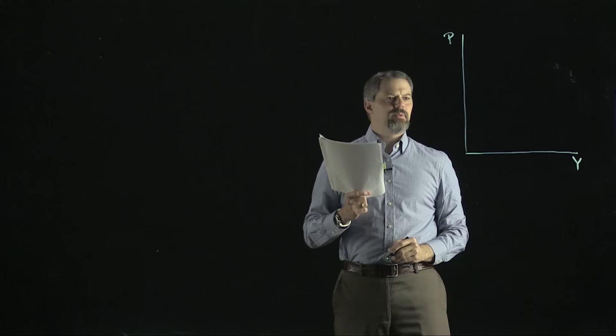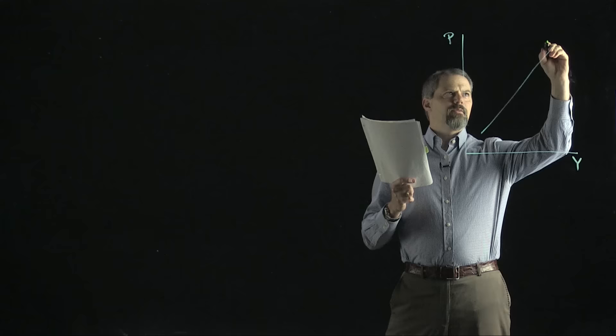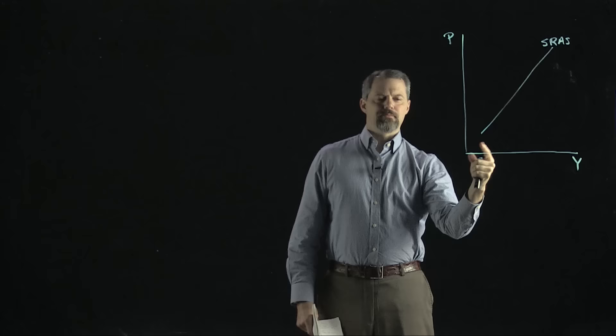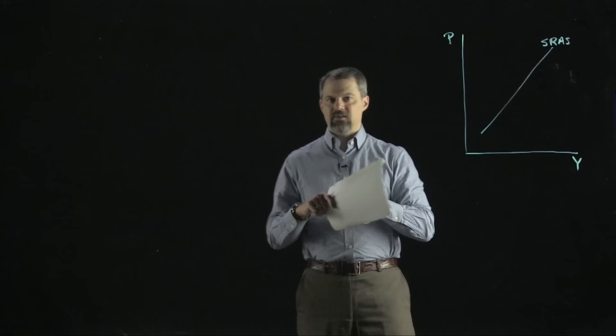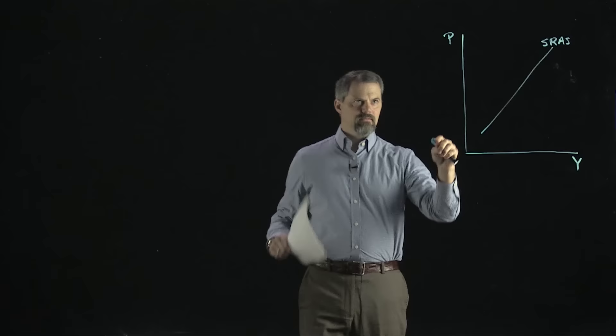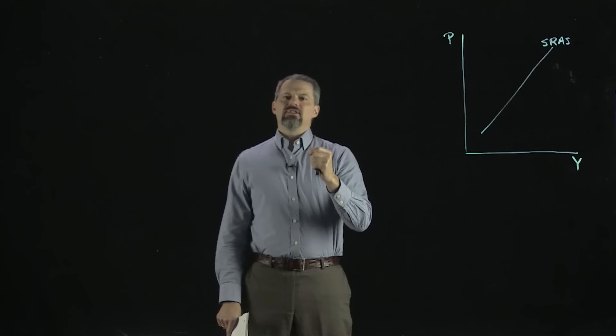The short-run aggregate supply curve slopes upward. With price level on the vertical axis and real GDP on the horizontal, the short-run aggregate supply is upward sloping. At low price levels, there's a small quantity of goods and services that all firms in the economy want to sell, and at high price levels, all firms want to sell more.